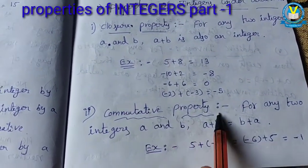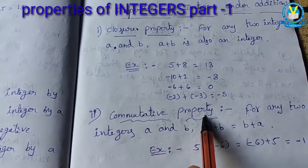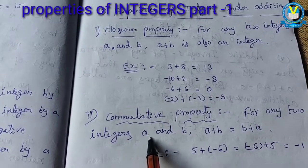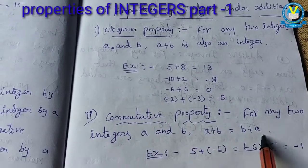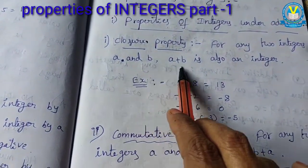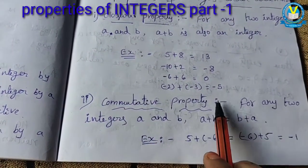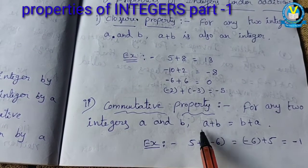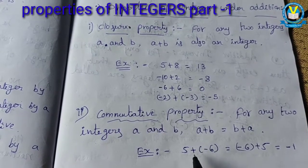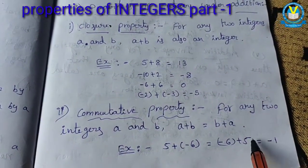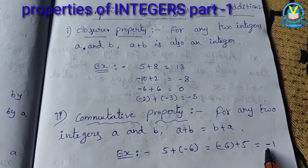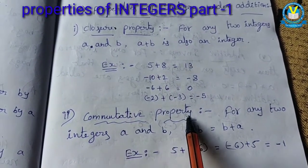The second one is commutative property. For any two integers A and B, we have the condition: A plus B equals B plus A. In closure property we take two integers and A plus B is an integer. Here, you take two integers, then A plus B and B plus A — the order changes but we get the same answer. For example, 5 plus minus 6 equals minus 6 plus 5. Same answer we get: minus 1. The order changes but the answer is the same. This is called the commutative property.